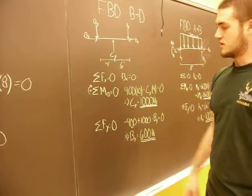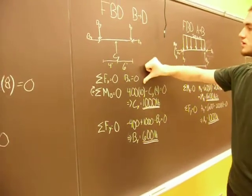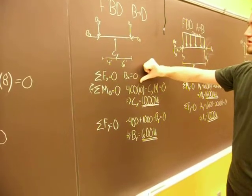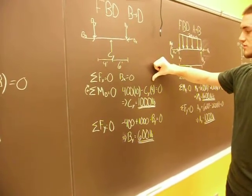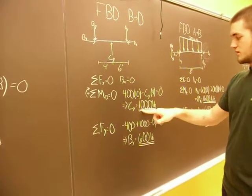Put the sum of the moments from point B. That equals zero. You got your DY, which is your 400 times your 10 feet acting away from B, minus your CY times 4, which is 4 feet away from B. And your CY comes to be 1000.